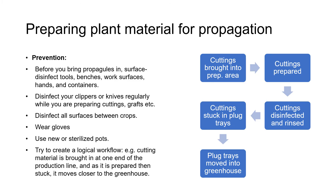Try to create a logical workflow. For example, you bring cutting material in at one end of the production line and as it's prepared it moves one step down the production line, getting closer each time to the greenhouse or whatever structure the plants you're propagating are going to end up in. This process makes propagation much more efficient and it's usually safer as you're not bumping into your colleagues or tripping over hoses.